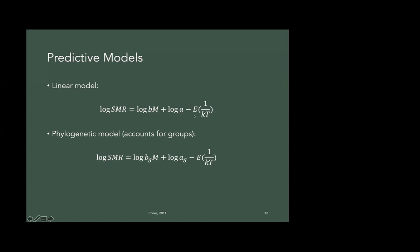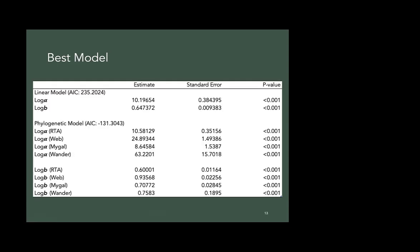So I had two different predictive models, a linear model, which is the standard metabolic rate. And this is all logged, so it's a straight line. And then I have my scaling exponent here and my intercept here. And I corrected, this is a correction for temperature. So I only use data points that had temperature data for. And then my phylogenetic model, which accounted for my groups, is the same model, except it has this subscript for the different groups.